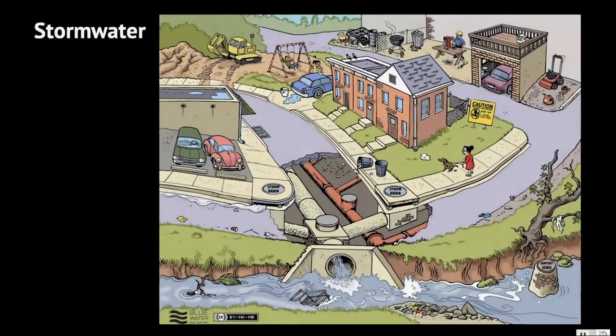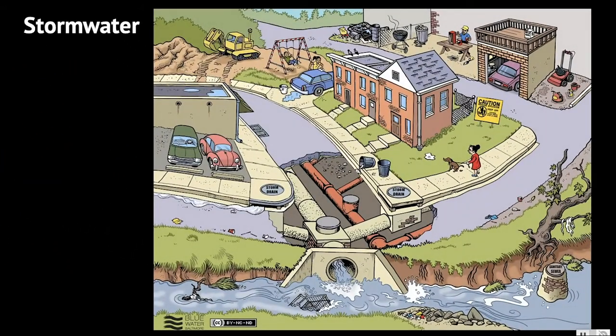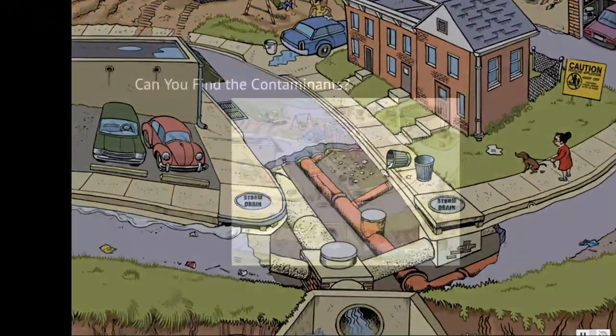Now let's talk about the second type of wastewater — stormwater. When water or snow falls on our roofs, sidewalks, and driveways, it collects all the debris on those surfaces and delivers it to a storm drain. The storm drain then pipes the contaminated water directly to the nearest body of water, usually a river or ocean. Unlike sewer water, this water is not treated.